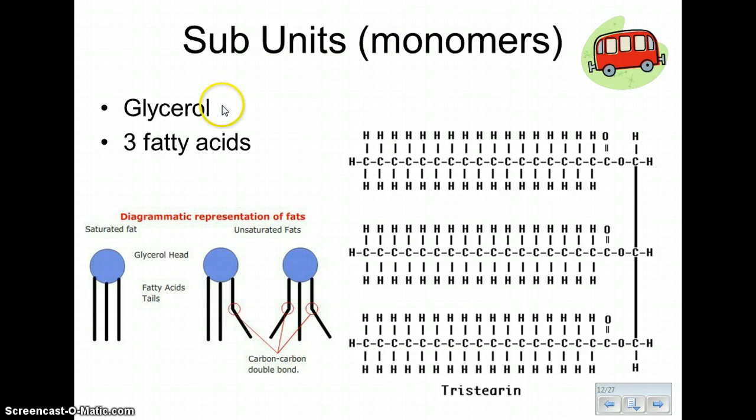The two monomers then are different in this case, but they're still the building pieces, and so glycerol and three fatty acids would be our monomer.